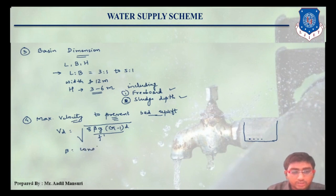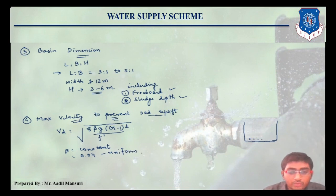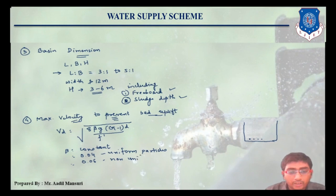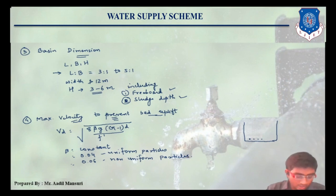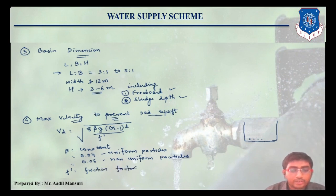Where beta is a constant, taken as 0.04 for uniform particles and 0.06 for non-uniform particles. F-dash is known as the friction factor, and its value is usually between 0.025 to 0.03.